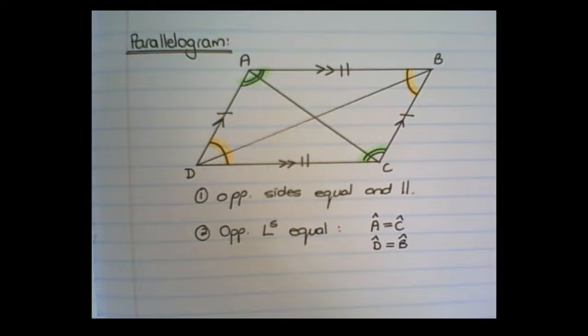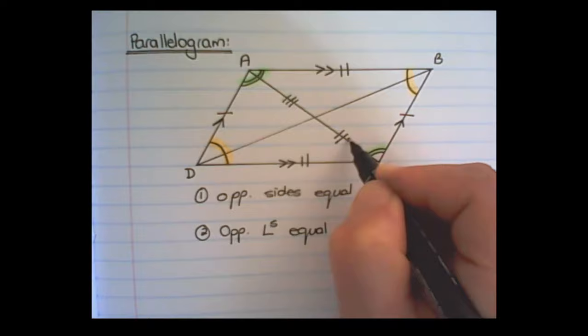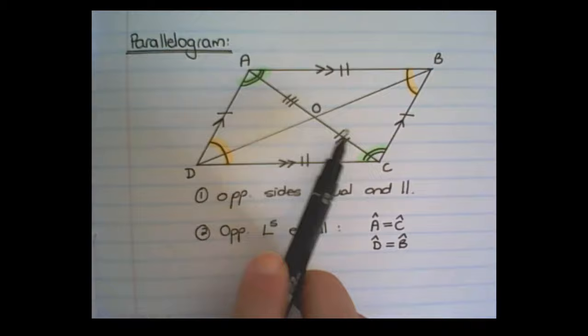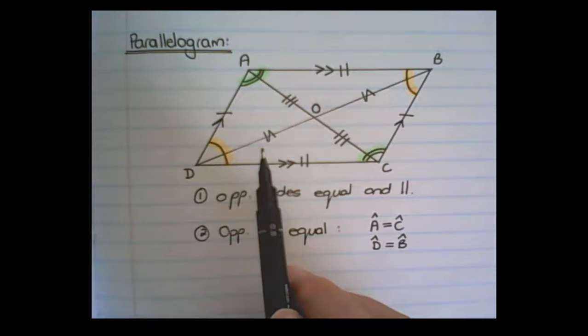So this diagonal cuts the line AC in half, meaning the line AO would be equal to OC. And the line AC cuts DB in half, meaning the line DO would be equal to line OB.